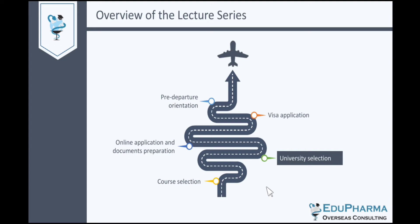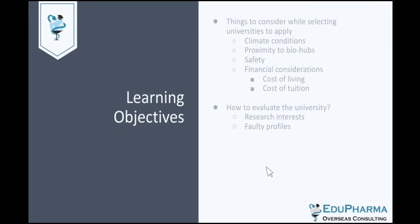Now let's look at things which you need to keep in mind while selecting the universities. The learning objectives of this particular talk include learning about the different things that you need to consider while selecting the universities to apply. We will also look at how to evaluate the universities with respect to their faculty profiles and the research that is carried out in those universities.